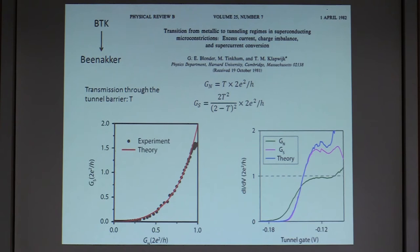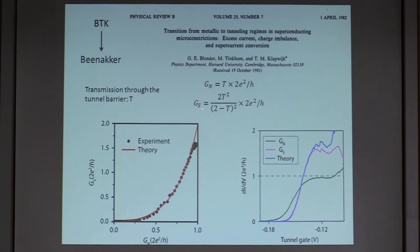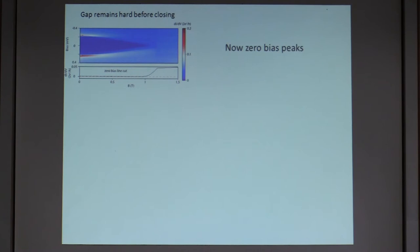At every gate value, we take the above-gap conductance to extract transmission T, then calculate the predicted G_S and compare it to the measured zero-bias conductance. The agreement is very good, meaning the sub-gap conductance is dominated by Andreev reflection, not quasiparticles — a strong indication of a hard gap. Plotting G_S versus G_N on a linear scale, the data closely follows the BTK prediction. The highest G_S we see is above 1.5 × 2e²/h, corresponding to a transmission higher than 95%. This hard gap also survives to high magnetic fields: the sub-gap conductance remains at zero until the bulk aluminum gap closes.